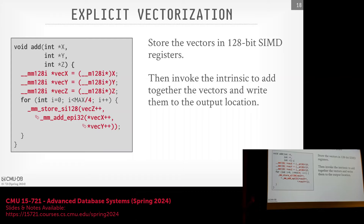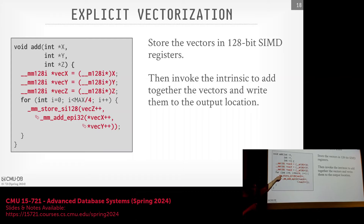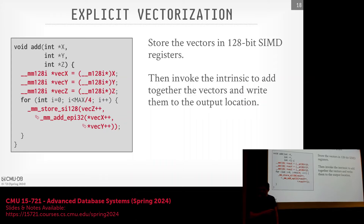Without a library, intrinsics code looks like this: you use a double-underscore prefix indicating the SIMD extension group and register size (e.g., __m128i for 128-bit integer). You cast your integer arrays into SIMD registers, then loop using SIMD add instructions and store to the output vector. The loop now does four additions at a time, so you divide the iteration count by four.